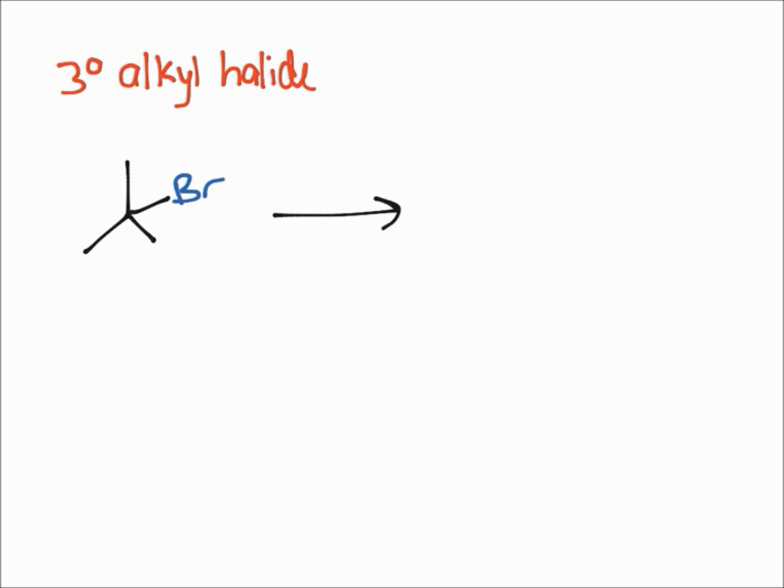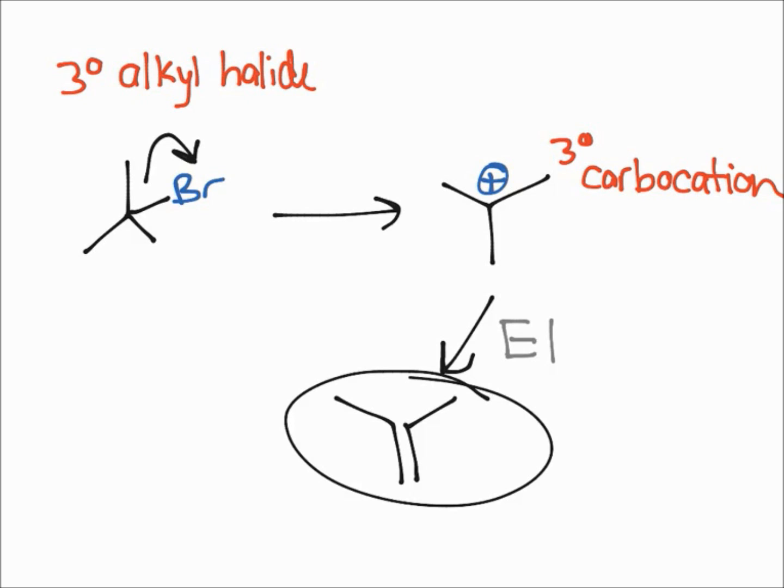We'll just start off with that molecule. For an E1 mechanism to begin, this bromine is going to leave and then you get this tertiary carbocation. Then a pi bond will form to give you this as your final product after the E1 reaction is complete.